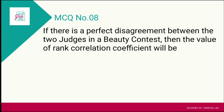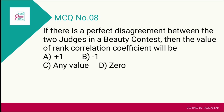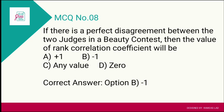Question number eight: If there is a perfect disagreement between two judges in a beauty contest, then the value of rank correlation coefficient will be? The options are: A) plus 1, B) minus 1, C) any value, D) 0. Perfect disagreement means there is a perfect negative correlation, which corresponds to minus 1. The correct answer is option B — minus 1.